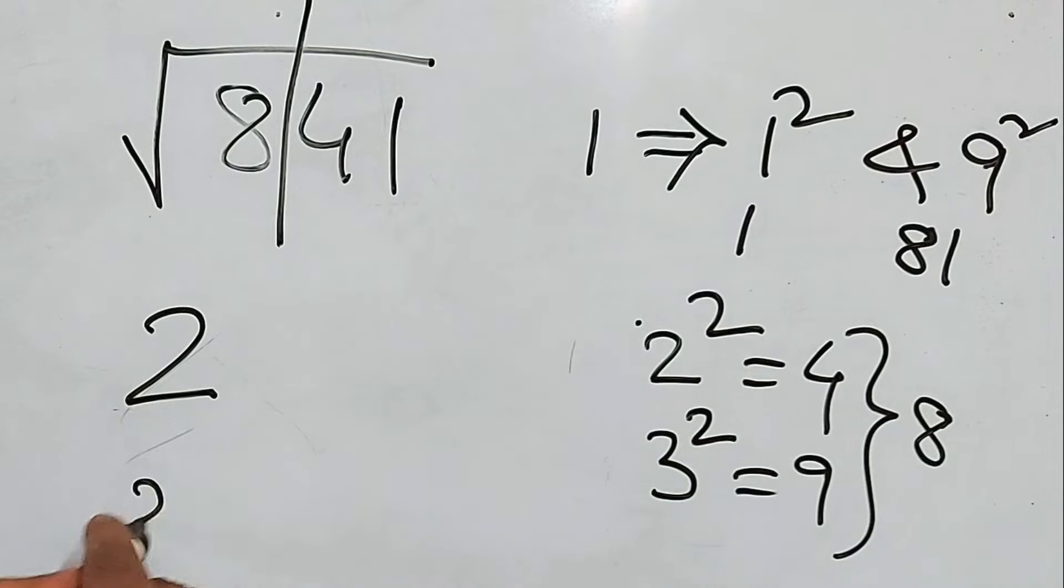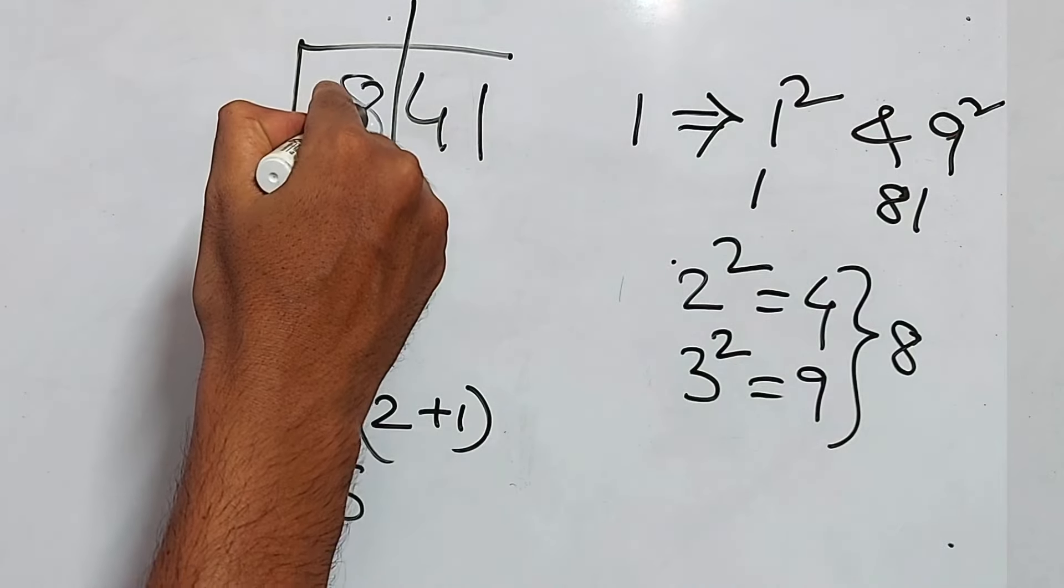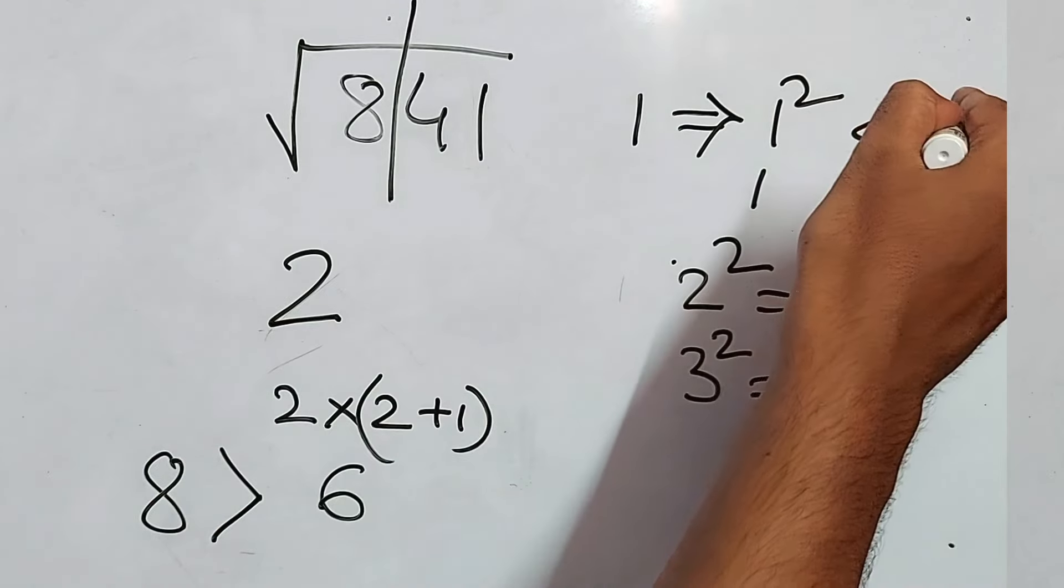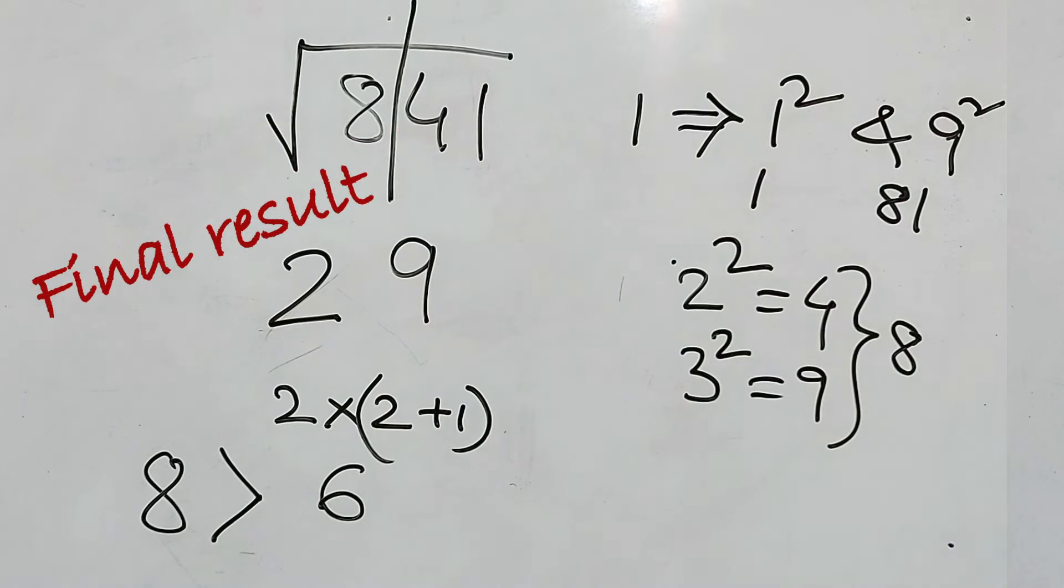But still, we don't know whether to take 1 or 9. The number has to be multiplied with the next number. That is 2 × (2+1), which means 2 × 3, that is 6. Now, 6 is less than this 8. So we have to write 8 > 6. Whenever you see this number is greater than this multiplied number, you take the greater number, that is 9. So your answer will be 29.